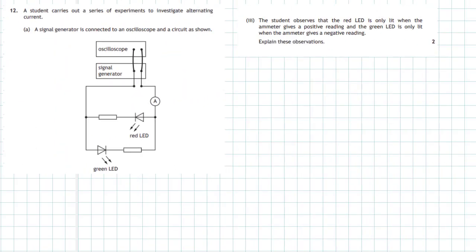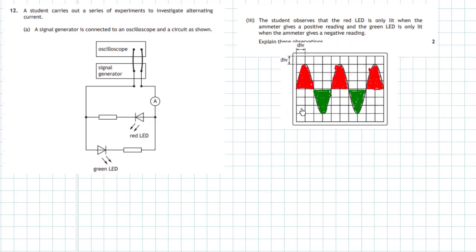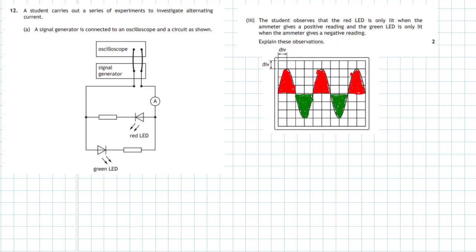Question 12 part (a), number three. The student observes from the circuit that the red LED is only lit when the ammeter gives a positive reading, and the green LED is only lit when the ammeter gives a negative reading. Now in order to explain that, I'm going to take a look at the signal generator's output on the oscilloscope. I've colored the top part of the graph red and the bottom part of the graph green. There's a clue there - when we have this part of the graph here, we have a positive voltage.